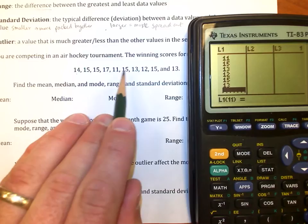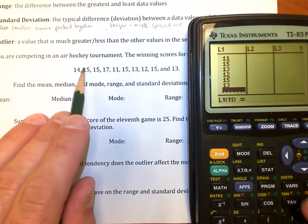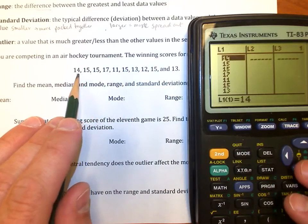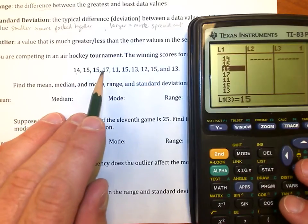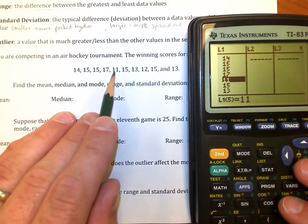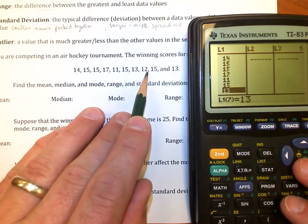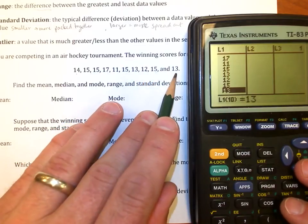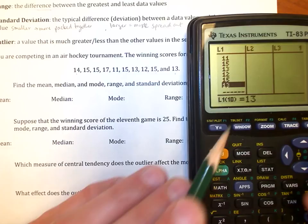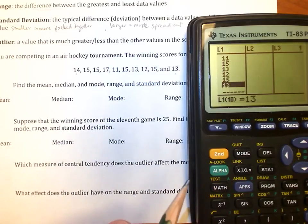Looks like I have 11 values. Is that correct? 1, 2, 3, 4, 5, 6, 7, 8, 9, 10. Looks like I screwed up somewhere. Let's go find out where I screwed up. So 14, 15, 15, 15, 17, 11, 15, 13, 12, 15, and 13. Oh, 10 values. Sorry. I just missed it. All right.